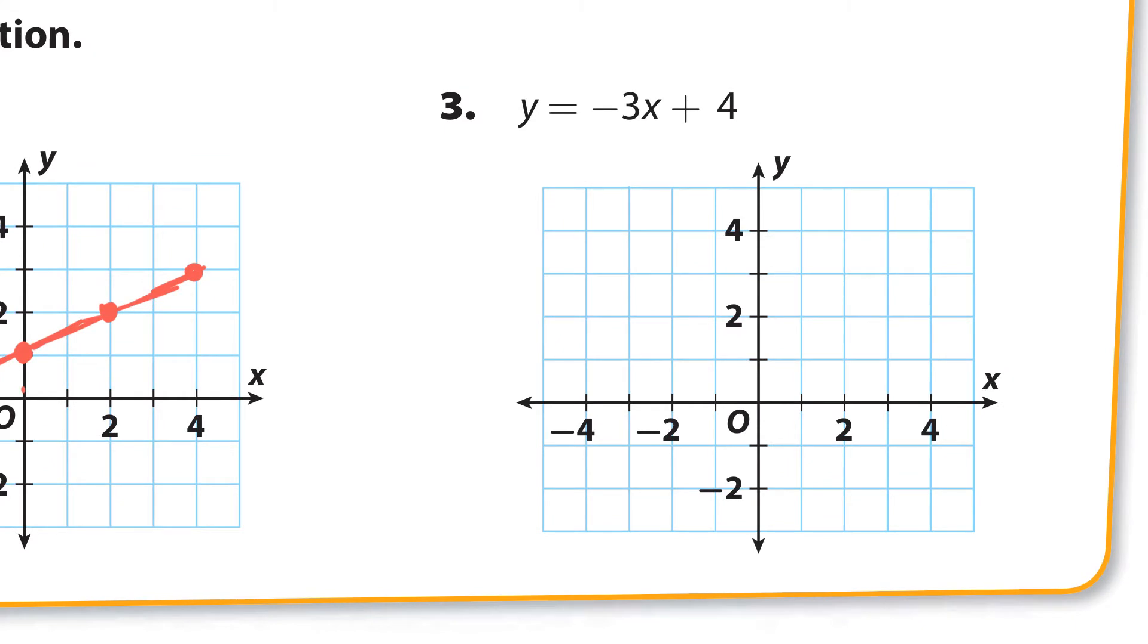Now, we have this one. And the m is negative three, and the b is four, so I use four first. And the m is negative three. So if slope is negative three over one, that means I go down three and to the right one. Down three, one, two, three, and to the right one. I can keep doing that. One, two, three, and to the right one. And there you go. There is the graph of the line.